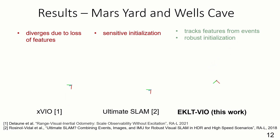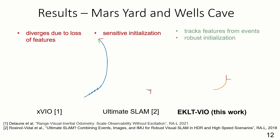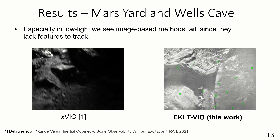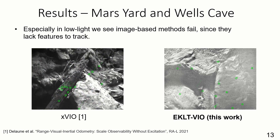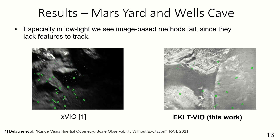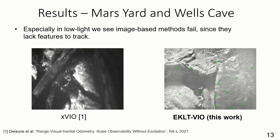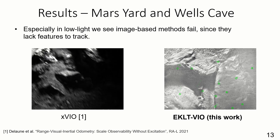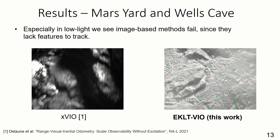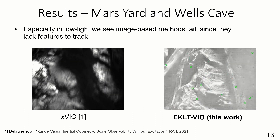Similarly, in HDR conditions with rapid lighting changes, as in the Mars Yard sequences, our algorithm still successfully tracks while the image-based algorithm diverges. Analyzing the failure modes of other methods, we see that X-VIO quickly loses detected features due to its low dynamic range camera, resulting in a flickering visualization. Only at the end does it manage to detect stable features. By contrast, EKL-TVIO has more stable features since it makes use of an event camera.